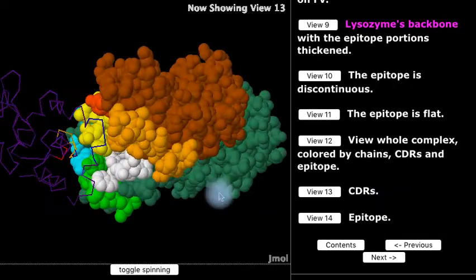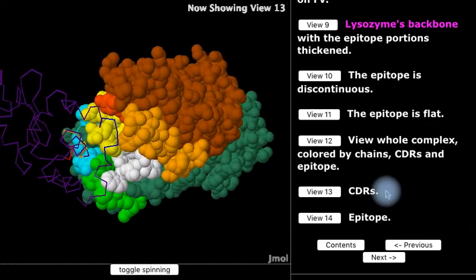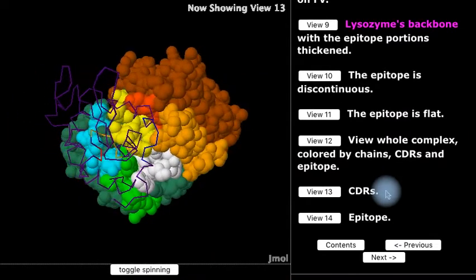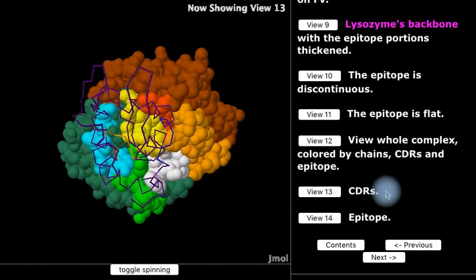Here, looking through a thin backbone trace of the lysozyme antigen, we see the six CDRs that make up the paratope of the FAB antibody.